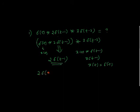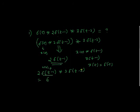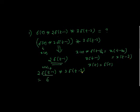Next, we convolve 2·δ(t−1) with 3·δ(t−2). Multiplying the scaling factors gives 6. We treat δ(t−1) as x of t — a delta function that is just time-shifted. Using the property that x(t) convolved with δ(t−t₀) equals x(t−t₀), where here t₀ is 2, this gives x(t−2), or δ(t−1) evaluated at t−2.